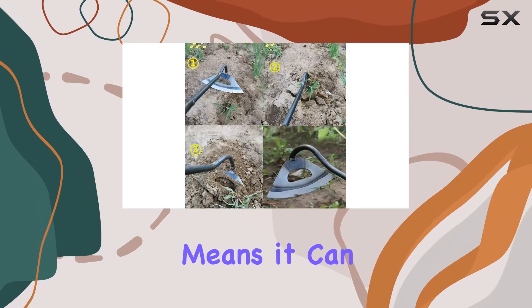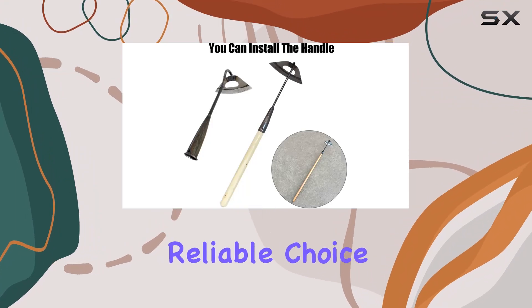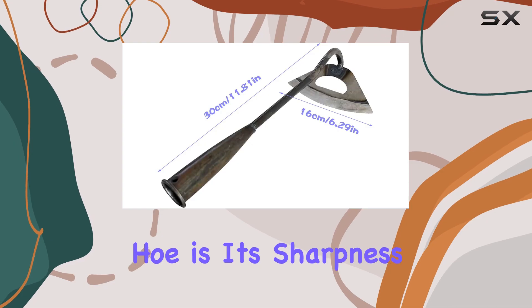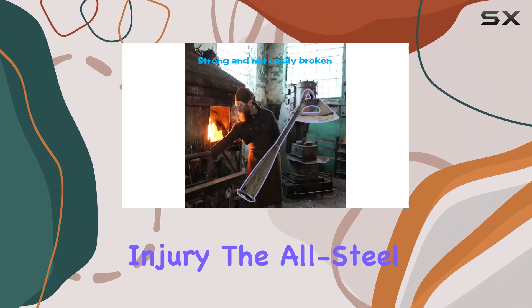The All-Steel construction means it can withstand significant wear and tear, making it a reliable choice for frequent use. One notable feature of this hoe is its sharpness. It's essential to handle it with care and wear protective gloves during use to avoid injury.